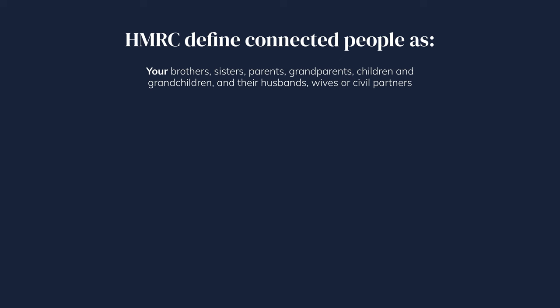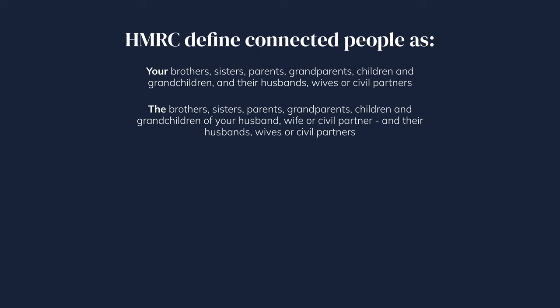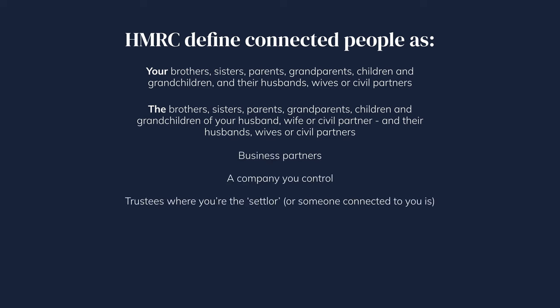As you do not usually pay capital gains tax on assets you give or sell to your spouse or civil partner, you cannot claim losses against these assets. You also cannot deduct a loss from giving, selling or disposing of an asset to a family member, unless you're offsetting a gain from the same person. This also applies to connected people such as business partners. HMRC defines connected people as including your brothers, sisters, parents, grandparents, children and grandchildren and their husbands, wives or civil partners; the brothers, sisters, parents, grandparents, children and grandchildren of your husband, wife or civil partner and their husbands, wives or civil partners; business partners; a company you control; and trustees, whether you're the settler or someone connected to you.